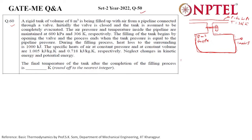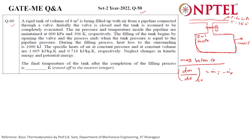First, we apply mass balance to the control volume. The rate of change of mass inside the control volume equals the inlet mass flow rate minus the exit mass flow rate. Since there is no exit, the exit term is zero.